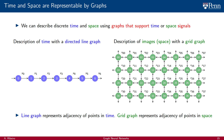Likewise, consider an image defined as a signal x with components xi and associate each of these components with a node of a grid graph. The grid graph is a good description of the local structure of the plane, and it is therefore also a good description of the underlying structure of the signal x.